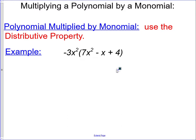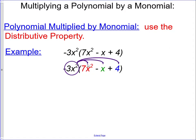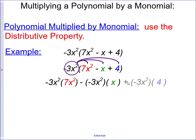I've separated the different terms in different colors. We're going to distribute the negative 3x squared over what's inside the parentheses. So we're going to multiply each thing inside the parentheses by negative 3x squared: negative 3x squared times 7x squared, subtract negative 3x squared times x, and add negative 3x squared times 4.